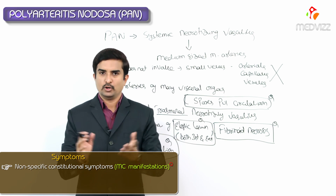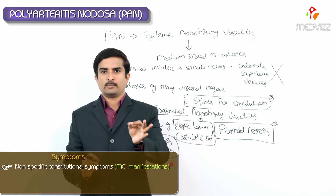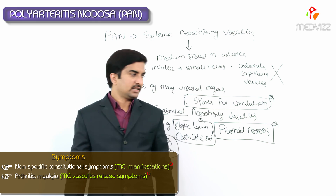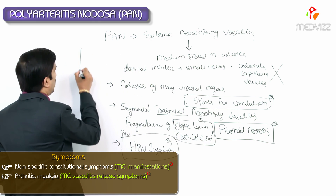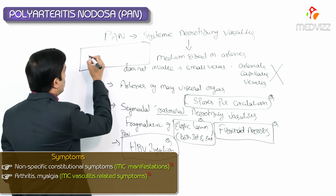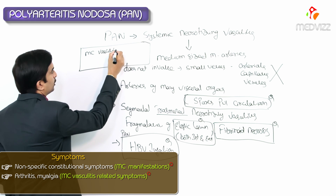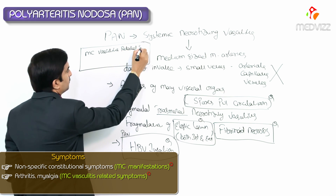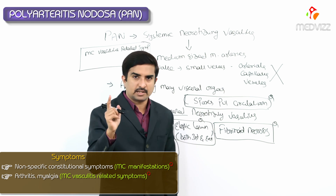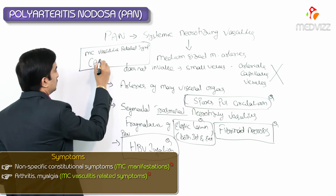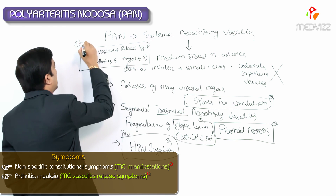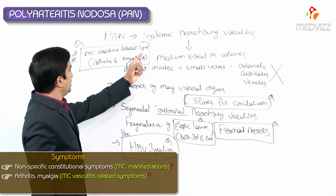Non-specific constitutional symptoms are the most common overall manifestations. Among vasculitis-related symptoms, musculoskeletal symptoms — specifically arthritis and myalgia — are the most common vasculitis-related symptoms in Polyarteritis Nodosa.